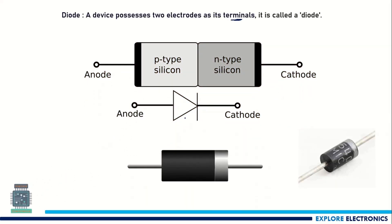Basically, a P-N junction diode consists of P-type silicon and N-type silicon connected together. We will be having a P region and N region connected together like this, which forms the junction. Wherever the P and N regions are connected like this, we call it as a junction.